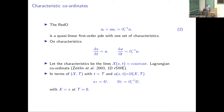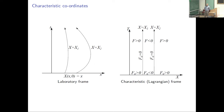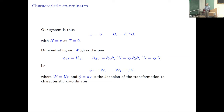In the laboratory frame, the characteristics appear curved, but in the characteristic (Lagrangian) frame, they're straight lines. Differentiating with respect to chi: x_chi,t equals u_chi. But x_chi is the Jacobian of the transformation, so we introduce phi for that. We introduce w for u_chi, so this equation becomes phi_t equals w.